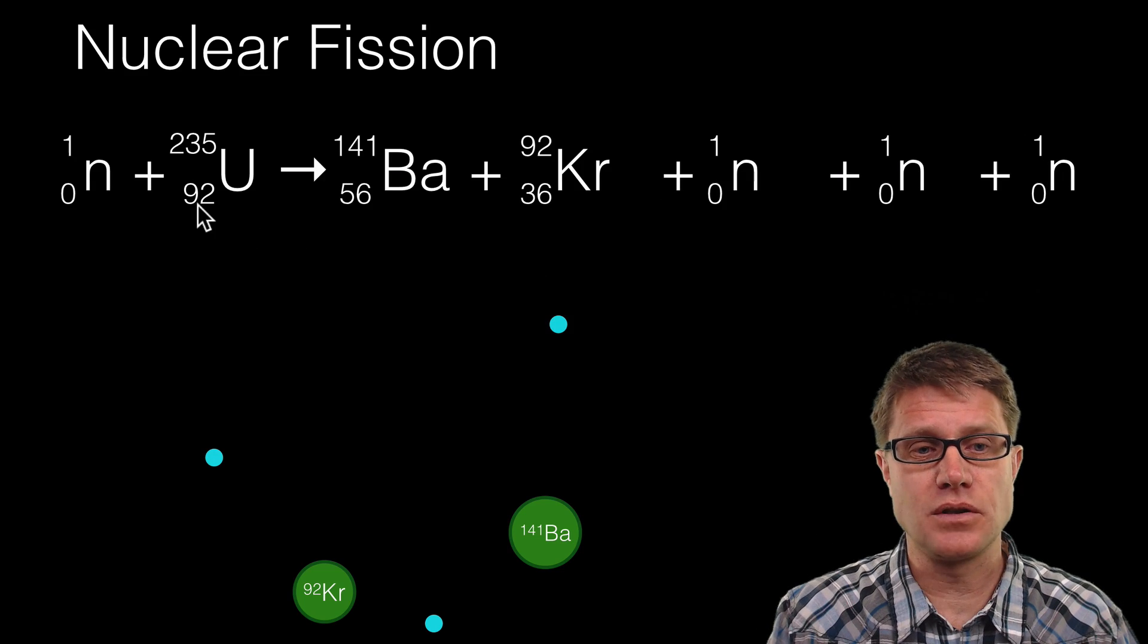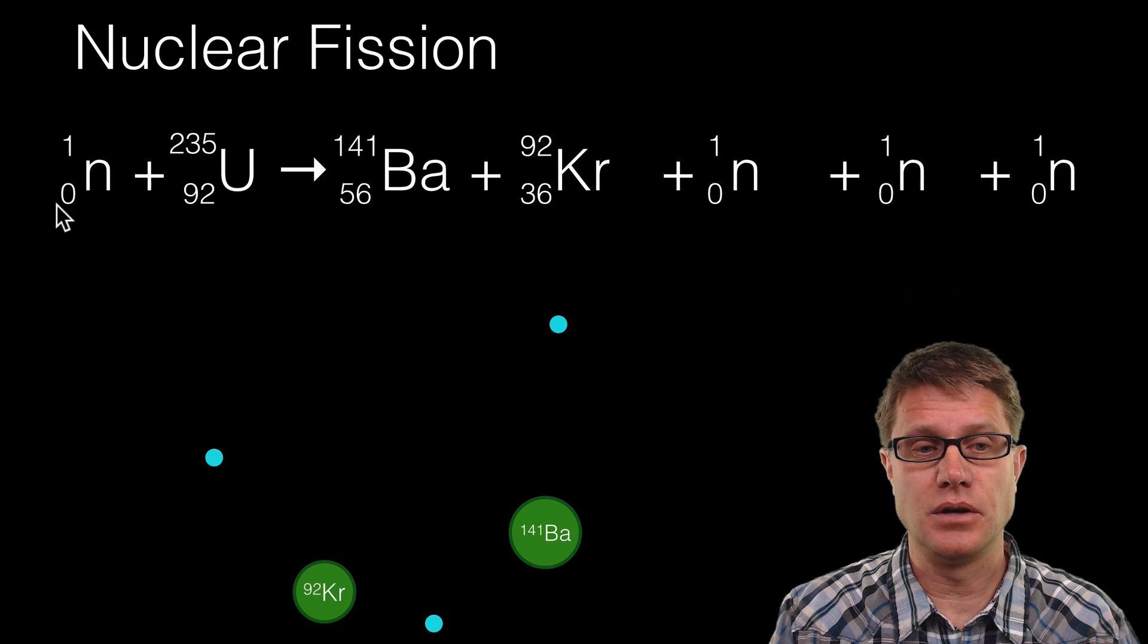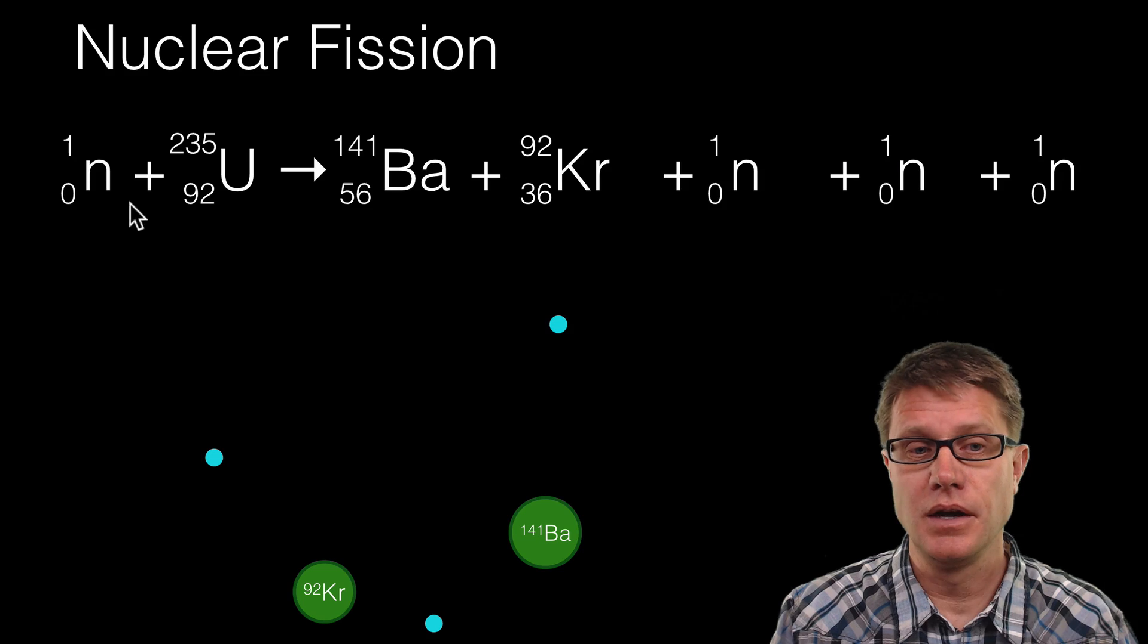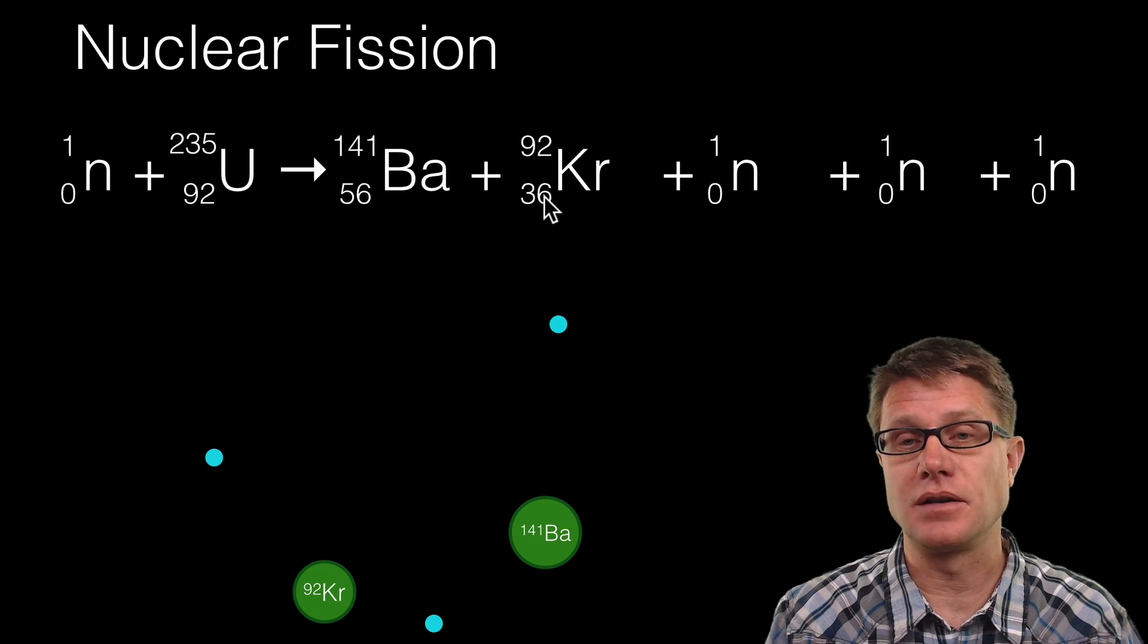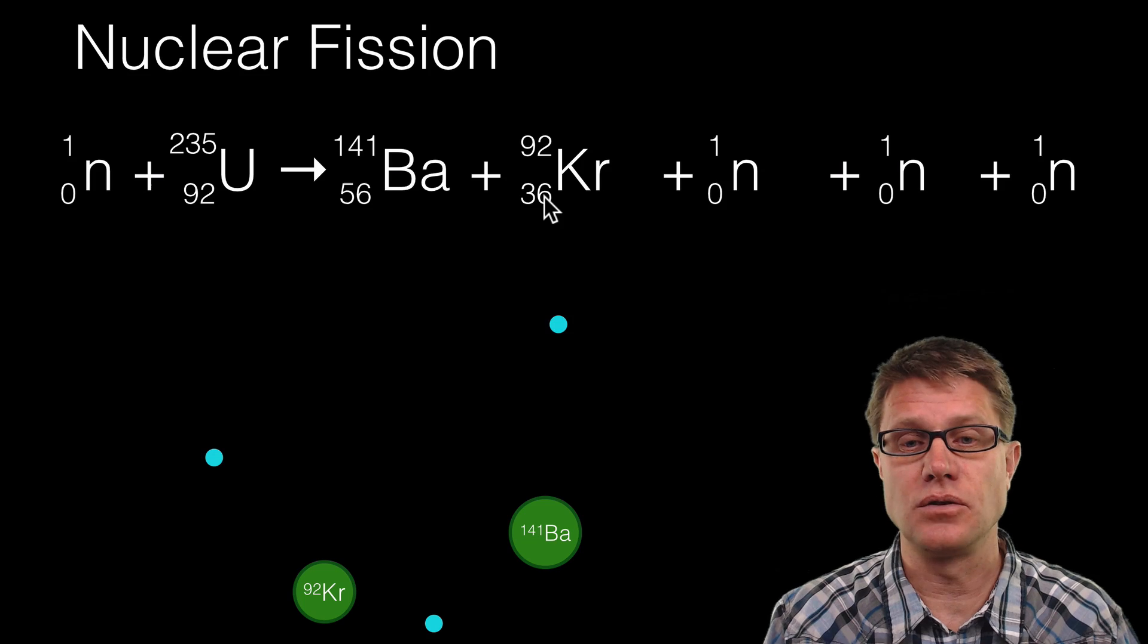We could also look at the charge. So what is the charge of uranium? 92. A neutron has no charge remember. And so 92 has to equal the charge of the barium and the krypton together. It is those protons in those two nuclei.